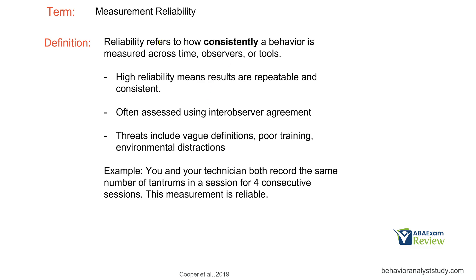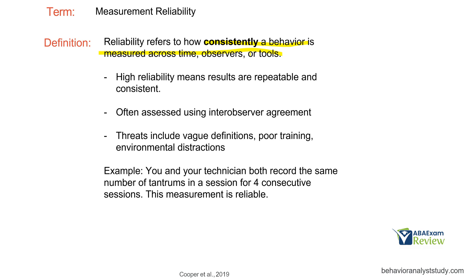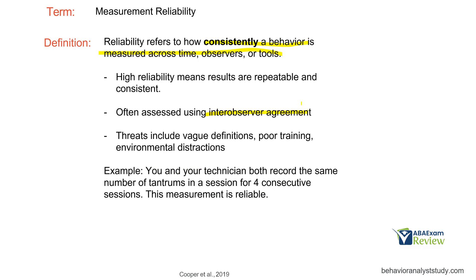Reliability refers to how consistently a behavior is measured across time, observers, or tools. So if validity is looking at the true reflection — measuring what we intend to measure — then reliability says we are consistently doing that over and over again. High reliability means results are repeatable and consistent, so you can trust that data are collected in a way that whenever you go to see that data, it's being collected the same way as it was three weeks ago. You don't have to question that. Inter-observer agreement plays a big role in reliability. Accuracy and validity kind of go hand in hand; IOA and reliability kind of go hand in hand.